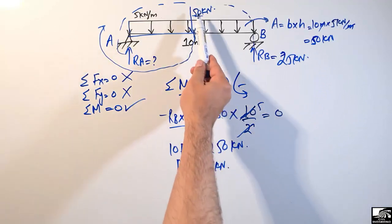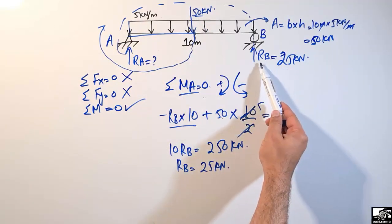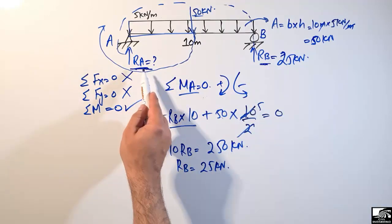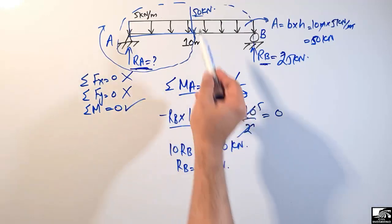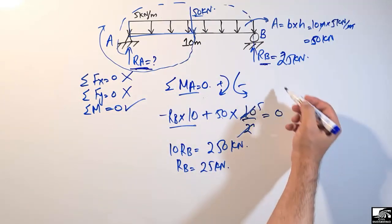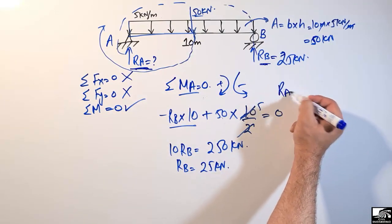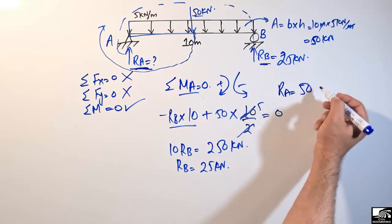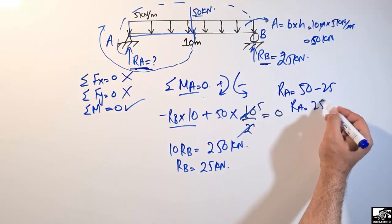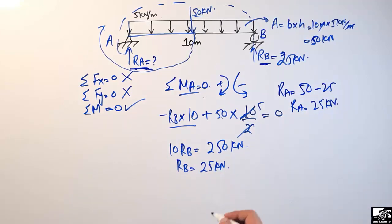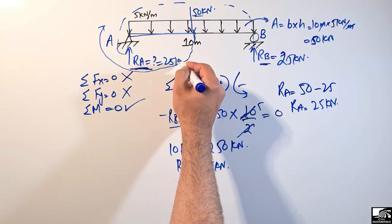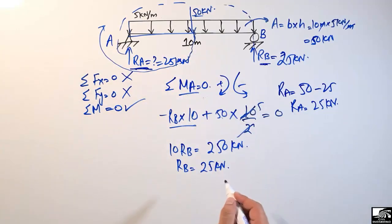The total load is 50 kilonewton and RB takes 25 kilonewton. Therefore RA equals 50 minus 25, which gives RA equals 25 kilonewton.